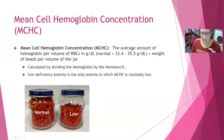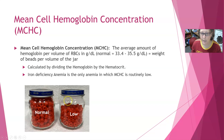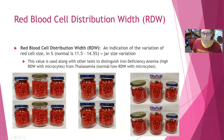In our illustration, a normal MCHC concentration is shown even with the micro-size smaller cell jars. A low MCHC is represented by fewer beads for the same volume of jar, indicating a lower concentration of hemoglobin per volume of red cell.